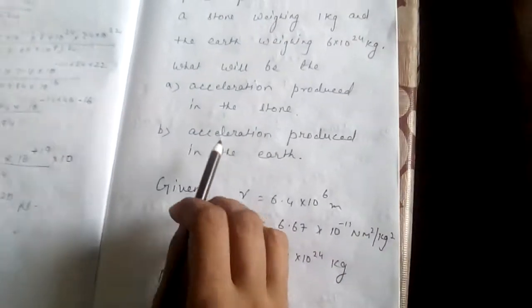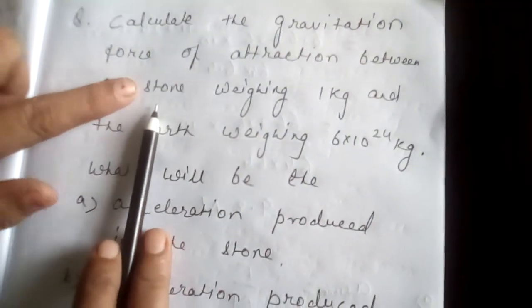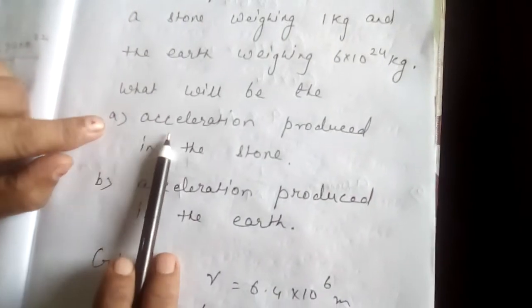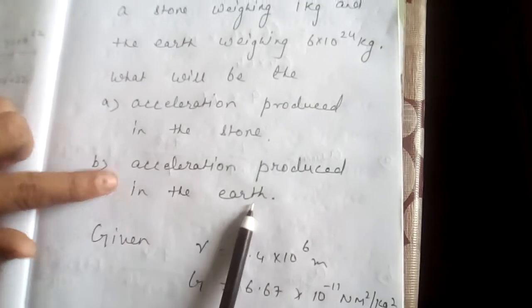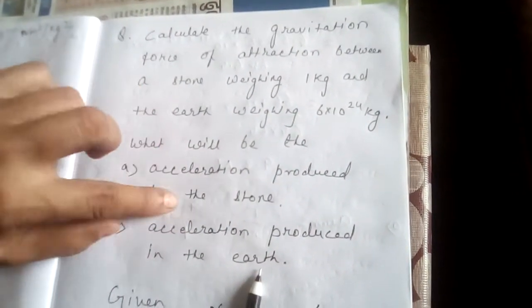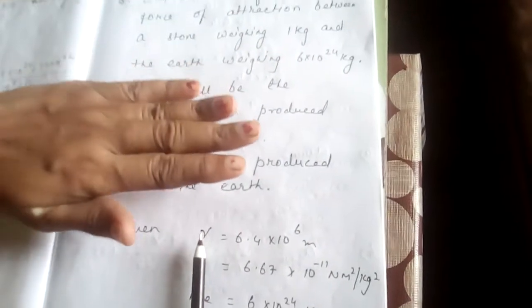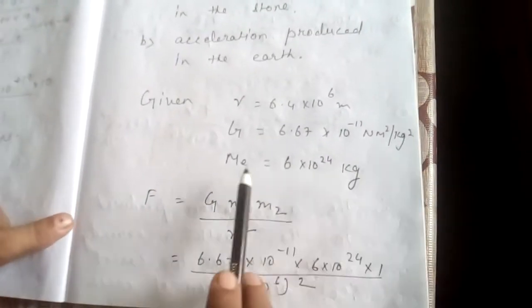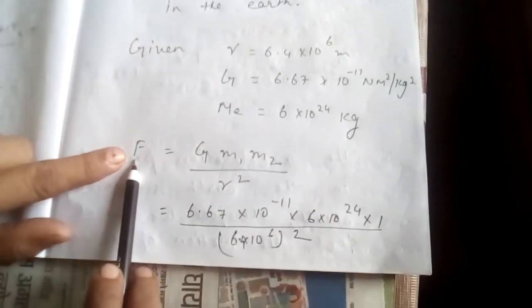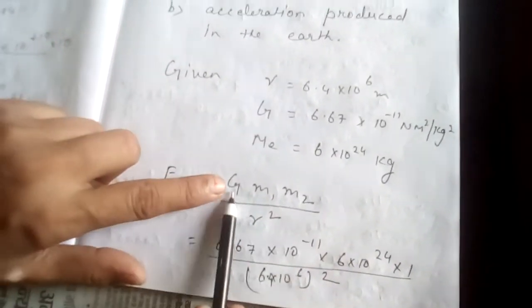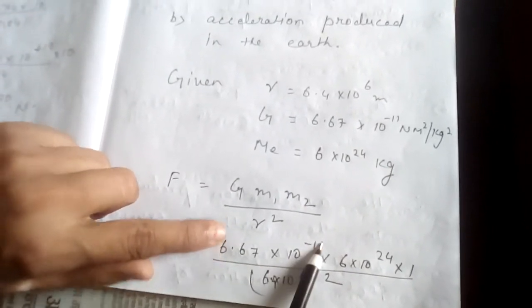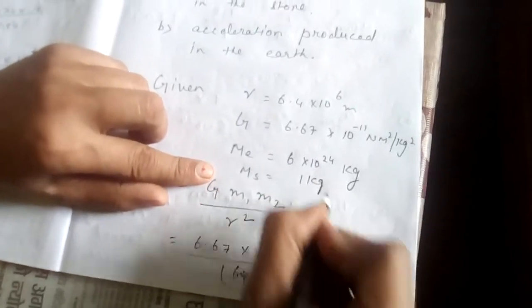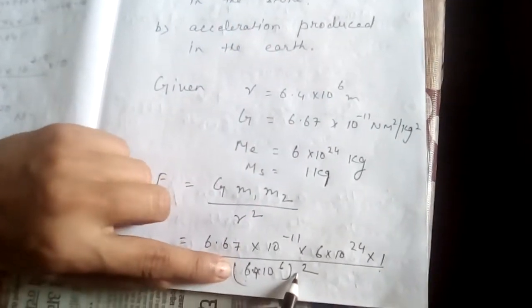With the same approach, here is one more numerical. Calculate the gravitational force of attraction between a stone weighing 1 kg and the earth weighing 6 × 10²⁴ kg. Then find the acceleration produced in the stone, and next, the acceleration produced in the earth. First we calculate the gravitational force, then the acceleration. The radius of the earth is used as the distance since the stone is on the surface: R = 6.4 × 10⁶ m. Mass of the earth = 6 × 10²⁴ kg, mass of the stone = 1 kg.